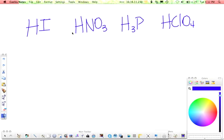The first thing when you're naming an acid is to figure out, is it binary or does it have a polyatomic ion in it? Just count the number of elements. For HI, we have two elements, so it is binary. I'll just put a little B for binary. For HNO3, we have three elements, so it's ternary. H3P is two elements, so binary. And HClO4 is ternary because it has a polyatomic ion.